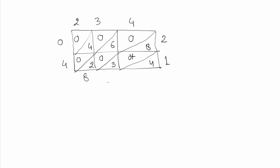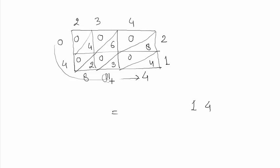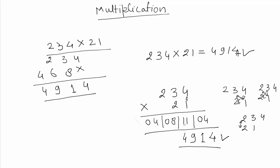Now add along the diagonals: 4 stays as 4; 6 plus 2 is 8; the next diagonal sums to 11, so write 11; and the last is 4. Moving through: the unit digit is 4; 11 has two digits so write 1 and carry 1, giving 9; then 4. The final result is 4914.